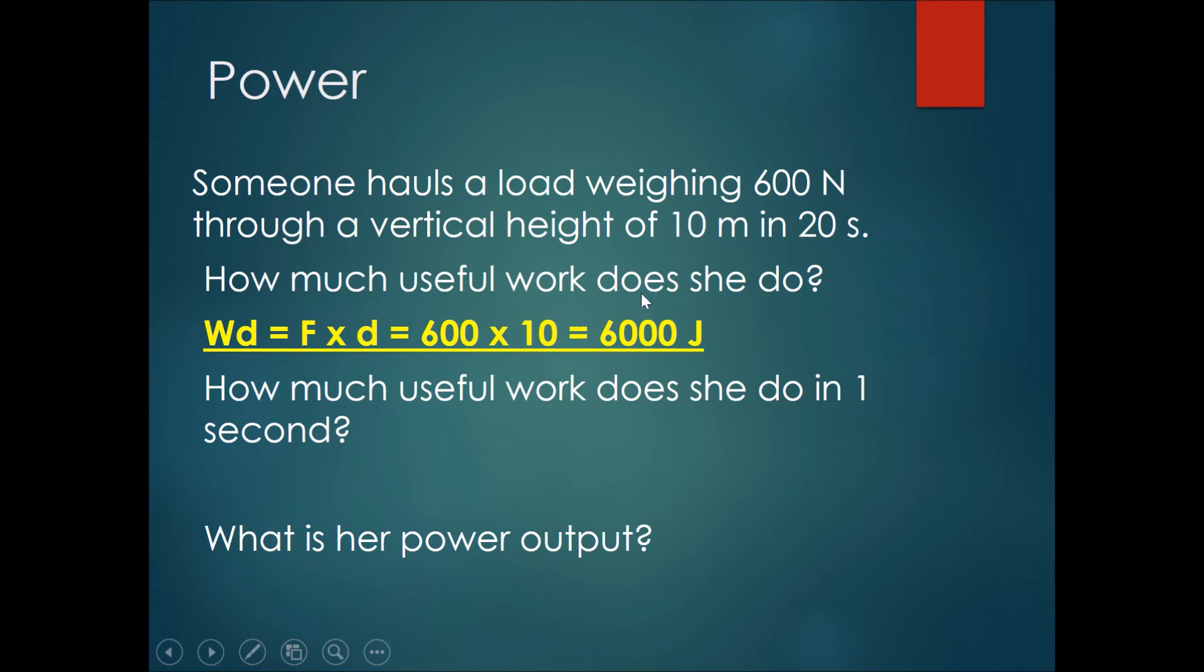So how much useful work does she do in one second? She did 6,000 joules of work in 20 seconds. Therefore, in one second she should have done, on average, 6,000 joules divided by 20 seconds, giving you 300 joules per second.